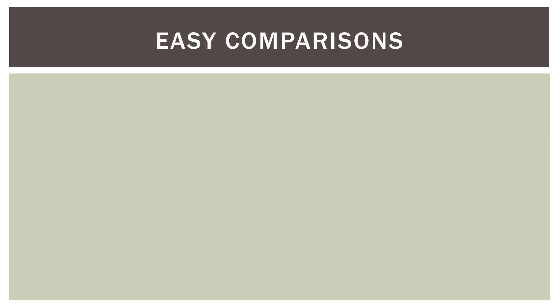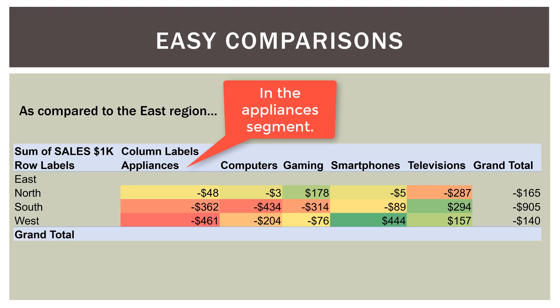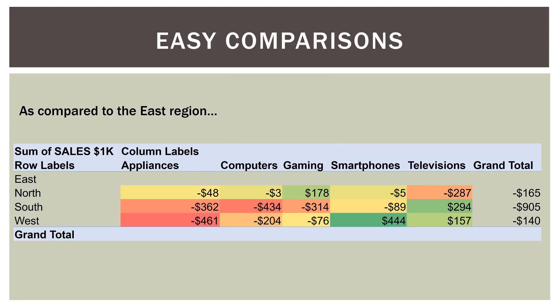Cross tabs also allow easy comparisons. Here we're looking at total sales compared to the east region — the east region row is blank and everything else is in comparison to it. The north region was $48,000 less than the east, the south $362,000 less, and the west $461,000 less. You can go across each segment: the north smartphones were $5,000 less than the east, the south $89,000 less, but the west had $444,000 over the east in smartphone sales.